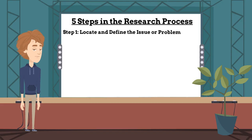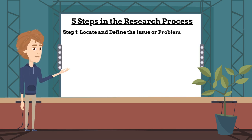Step 1 of the research process is to locate and define the issue or problem. This step focuses on uncovering the nature and boundaries of the situation or question related to the research.